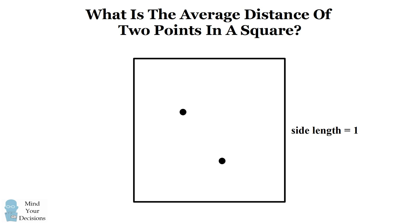Consider a square whose side length is equal to one. You pick two points at random and calculate the distance between those points. What is the average value of the distance?